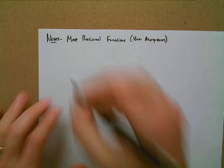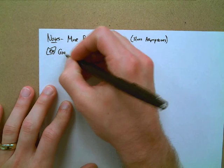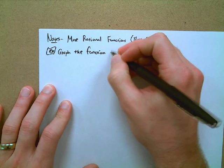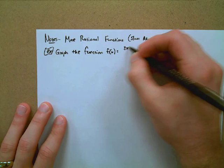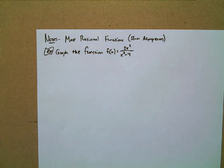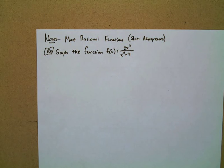Before we get into slant asymptotes, I want to look at just one more rational function. We'll jump in and do one more. Not every rational function we're going to look at will look exactly like the ones we had for homework — they can alternate and shift around a little bit. So we want to be aware of that.